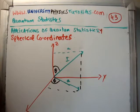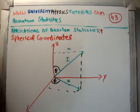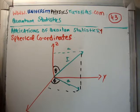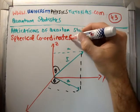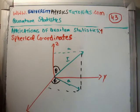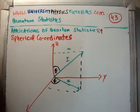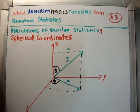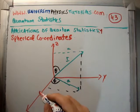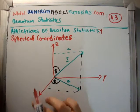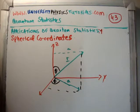In this video I'm going to continue on with my tutorials on quantum statistics. This is video number 43 and I'm going to begin a series of sub videos on the applications of quantum statistics. So in order to do this I need to discuss spherical coordinates, which is what I'm going to do in this video. Spherical coordinates probably scared the life out of you — they certainly did for many a year for me. What I'm going to show you is that there's nothing particularly to be scared about; it's pretty straightforward.